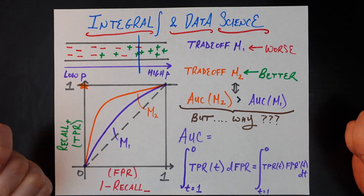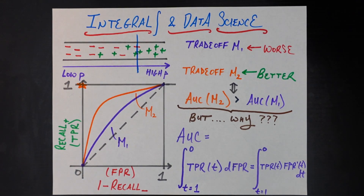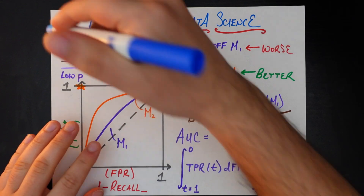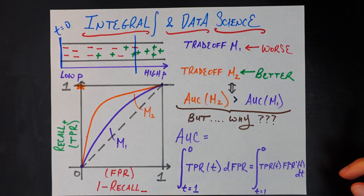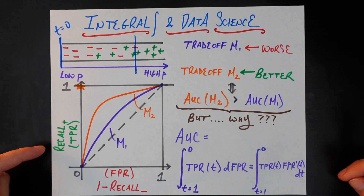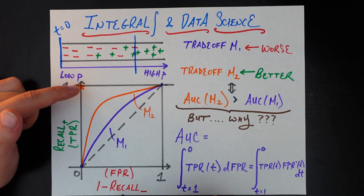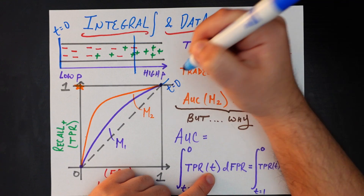AUC is an area under a curve, and from introductory calculus we know that if you want the area under a curve, an integral is the definition of that. One quick sanity check before we get to the integral: understanding where setting the threshold equal to a 0 probability or 1 probability exists in this graph, because it's a little bit backwards from what I initially thought. If the threshold t equals 0, then everything is marked as positive, which means the recall of our positive class is 100%, but we have basically 0 recall on our negative class — so 1 minus that is 1. That means the point (1, 1) is where the threshold equals a probability of 0.